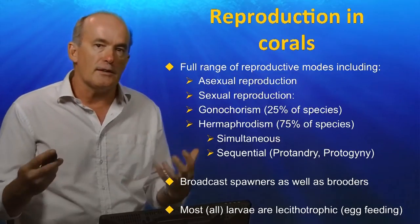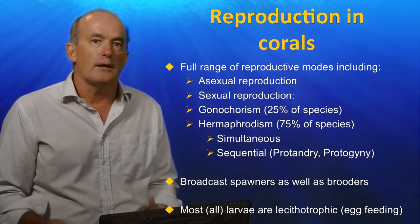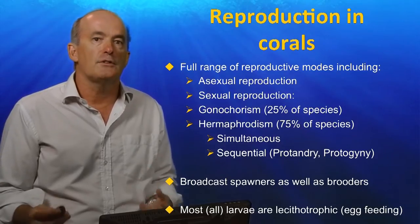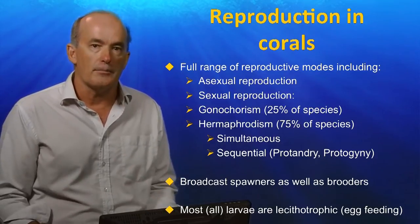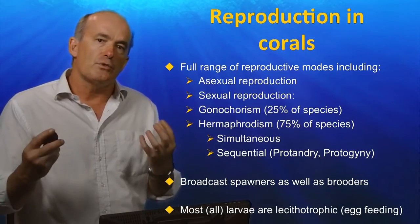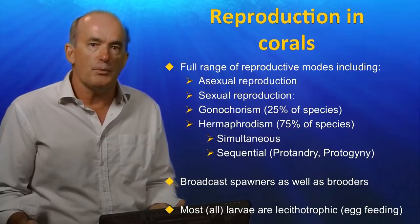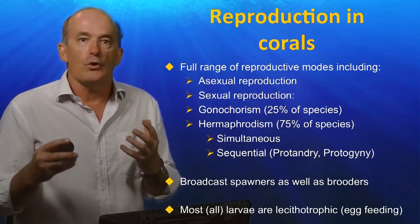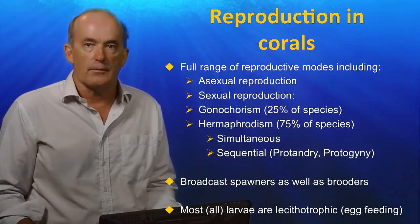Among the hermaphroditic species, there are many that are simultaneous hermaphrodites, as well as those that show protandry or protogyny. In terms of reproductive strategies, there are broadcast spawners as well as brooders. Most, if not all, larvae are non-feeding or lecithotrophic.